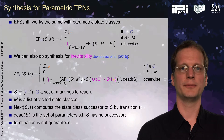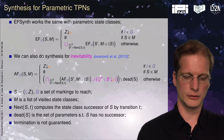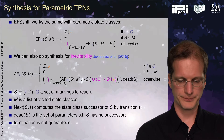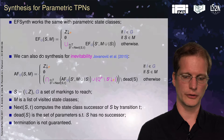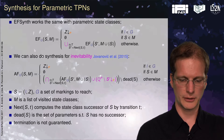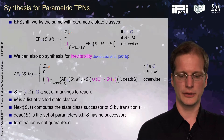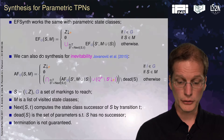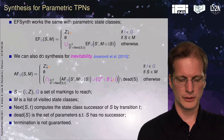For existence reachability (EF) of some state, we have the algorithm seen in another sequence for parametric timed automata. We can also do inevitability or unavoidability (AF), and it works more or less the same.